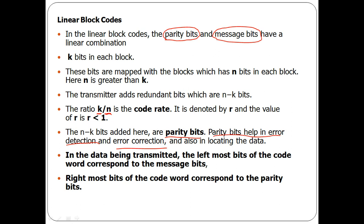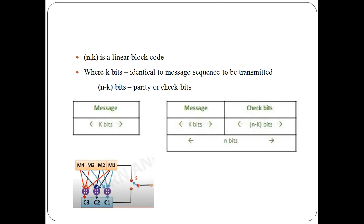In the data being transmitted, for example 1011, the leftmost bit is called the MSB. The leftmost bits of the code word correspond to message bits. For example, in a 7 comma 4 linear code, the first four bits are message bits and the next three are check bits. The MSBs on the left side are message bits; the right side contains the check bits, as I will show in the pictorial representation.